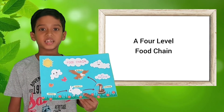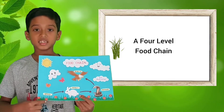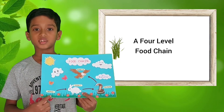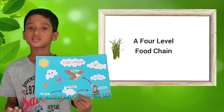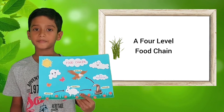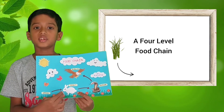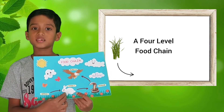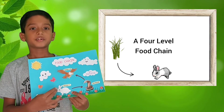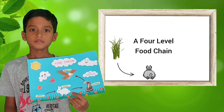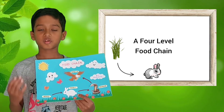My food chain has four levels. At level 1 is the producer, grass. It makes its own food. At level 2 is the primary consumer, rabbit. Rabbit eats the grass, the producer.